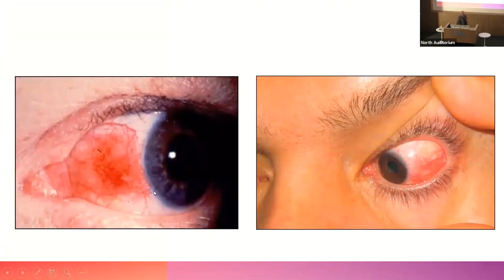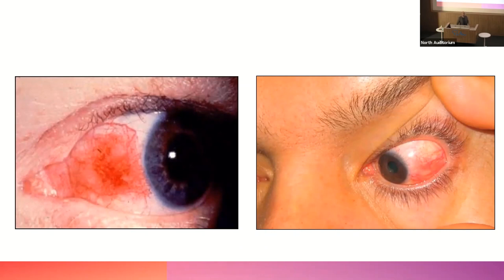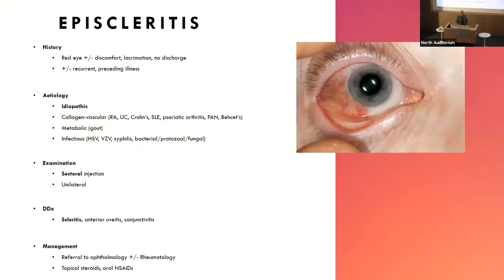Episcleritis: the redness is very localised — sectoral. The top part of the eye is white but one sector, such as the temporal aspect, is red. When you see sectoral injection, think episcleritis or scleritis. Consider whether there's an underlying rheumatological condition. For episcleritis, there's redness, discomfort, and possibly preceding illness. The nasal aspect may be completely white. Most commonly it's idiopathic for a first presentation.